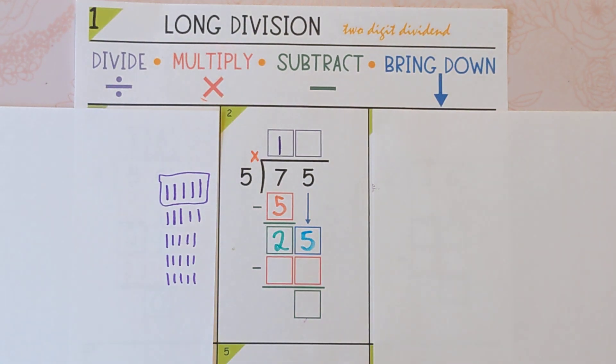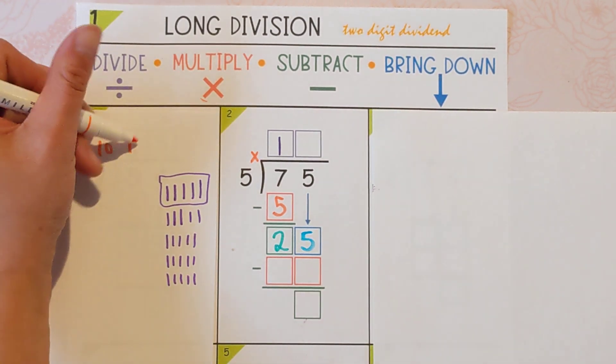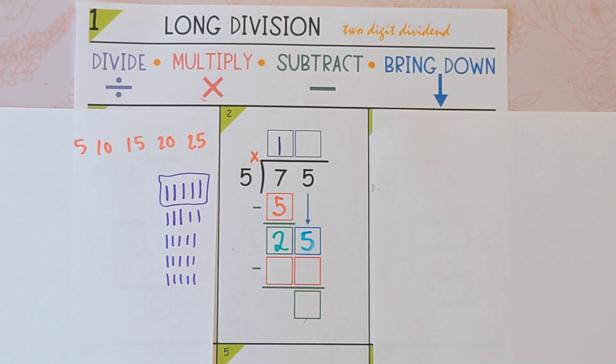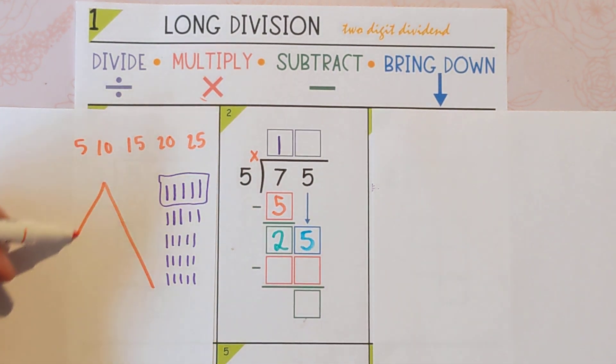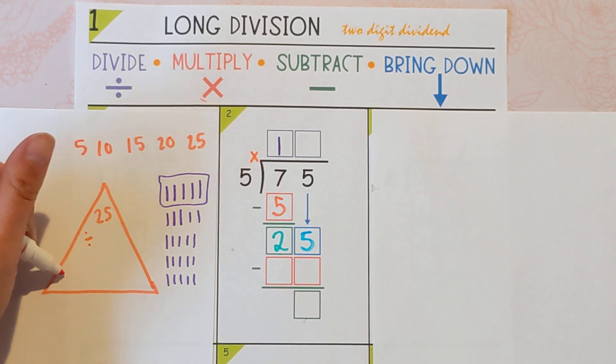You could also skip count your 5s till you hit 25 and then just count how many of those there are. And then another option is to just use your kind of multiplication and division skills. So 25 divided by 5.